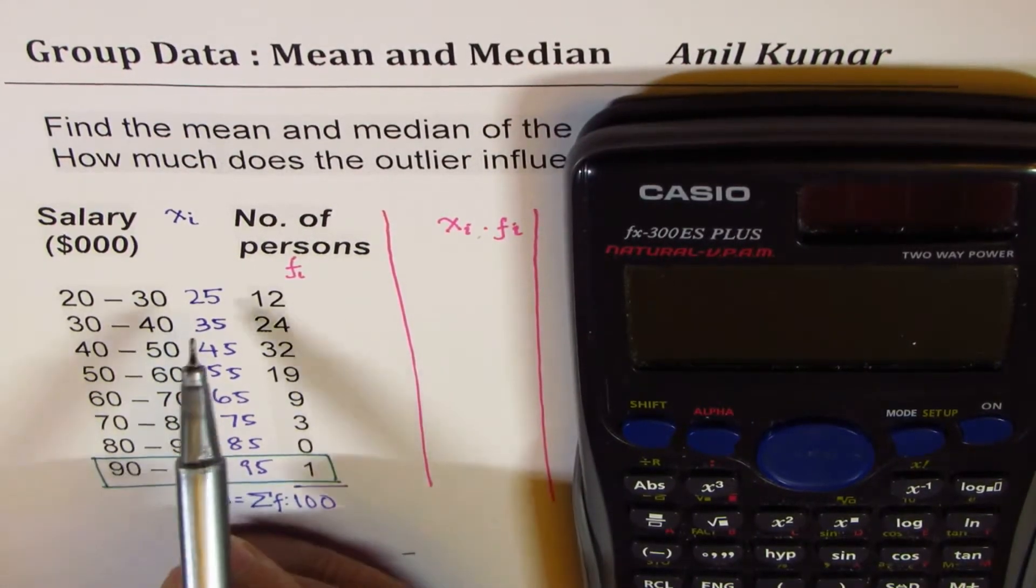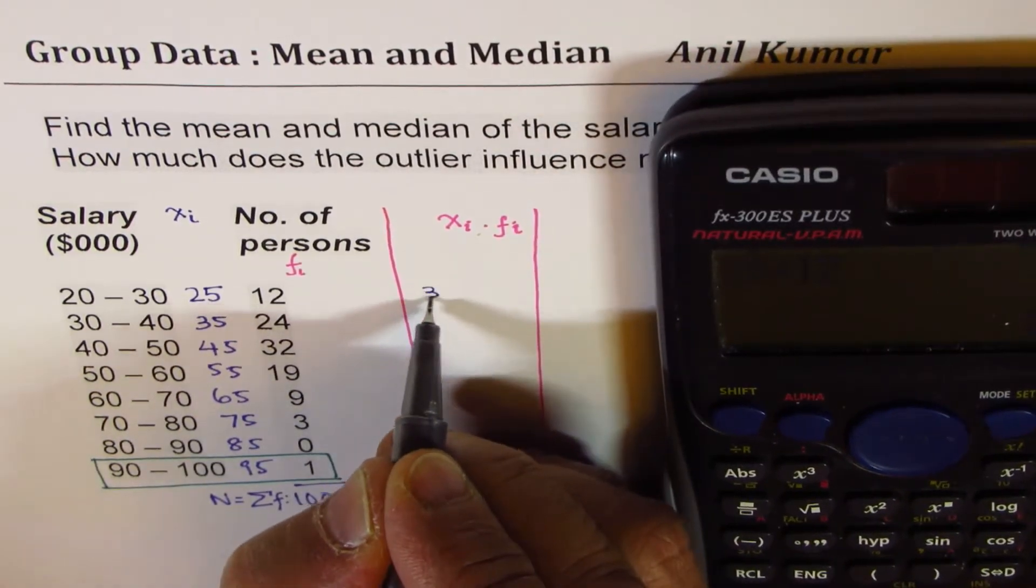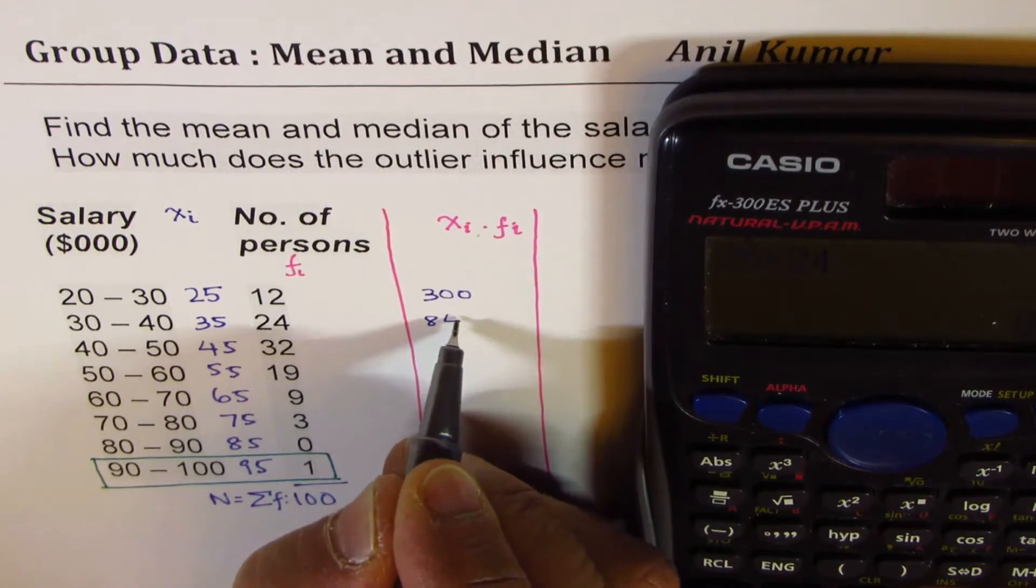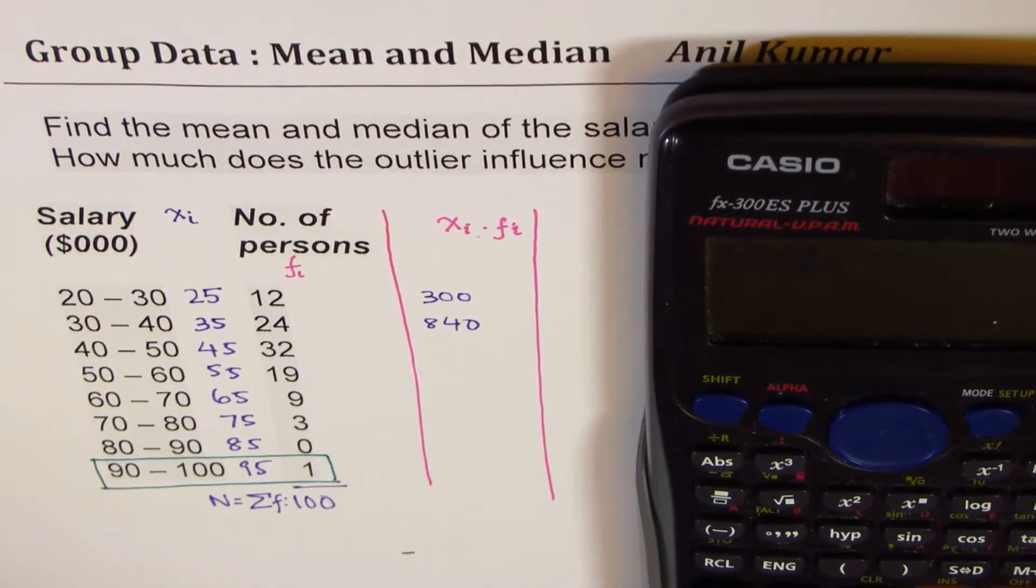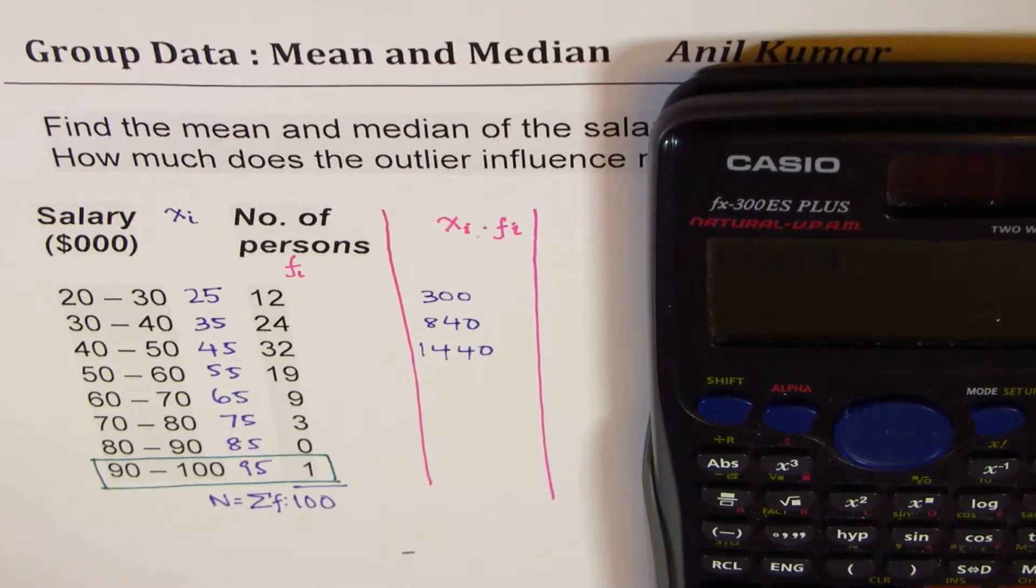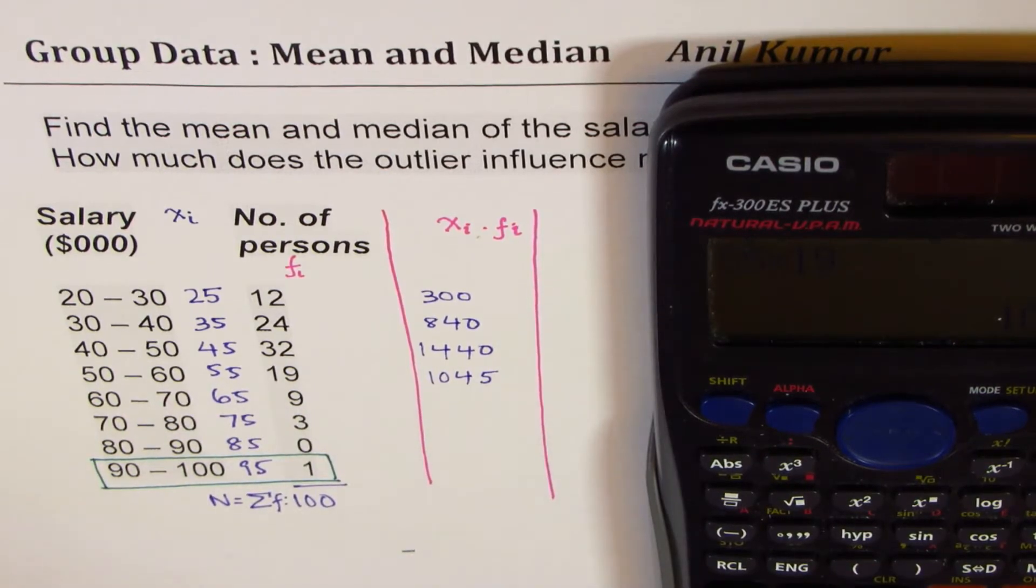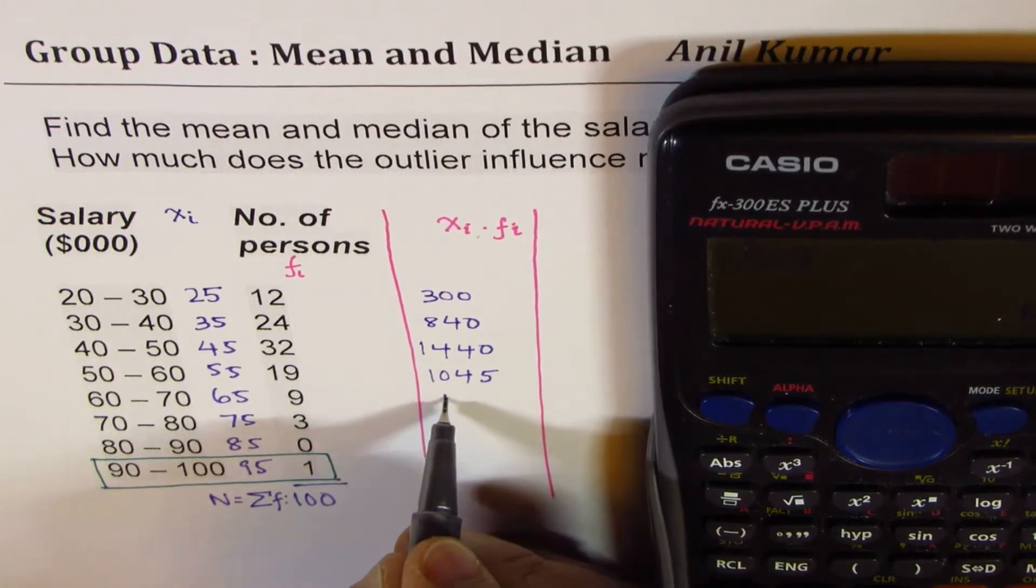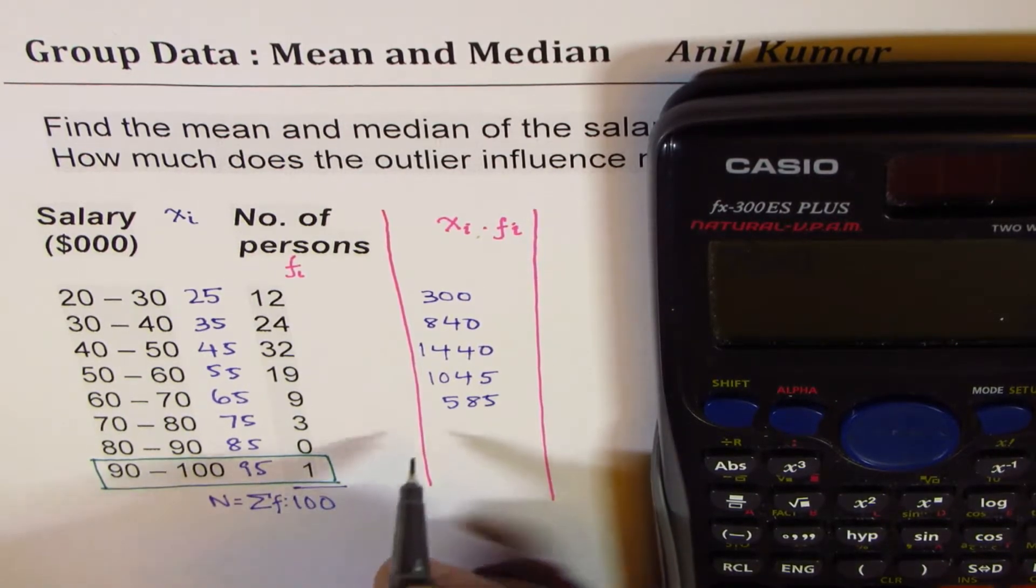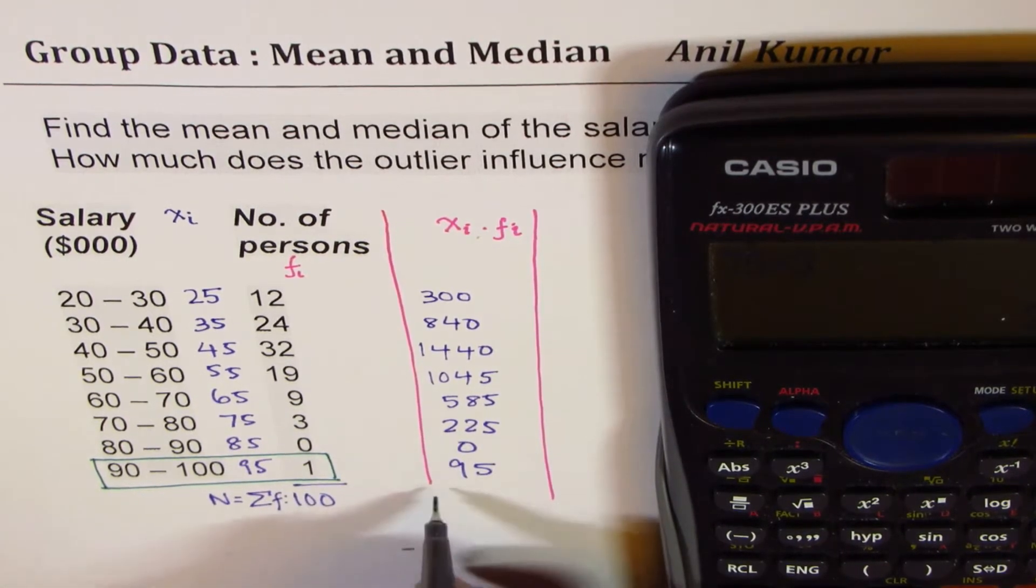So we will do 25 times 12 equals 300. 35 times 24 is 840. 45 times 32 is 1440. 55 times 19 is 1045. 65 times 9 is 585. 75 times 3 is 225. 85 times 1 is 85. And 95 times 1 is 95.